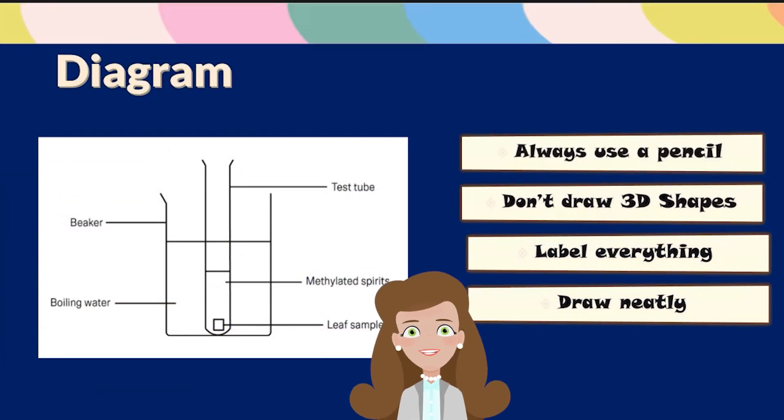After the materials section, you should draw a diagram of the equipment setup. When you do this, make sure you always use a pencil. Don't draw 3D shapes, so all your diagrams need to be in 2D. Label everything and draw neatly.